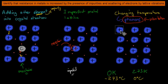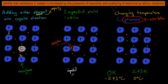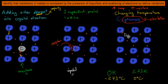At higher temperatures, there is a greater chance for electrons to collide with these vibrations, causing loss of energy — and that is resistance. Note this is for metals, not semiconductors: for a semiconductor, higher temperature actually lowers resistance. But for a metal, higher temperature means higher resistance, and lower temperature means lower resistance, because the phonons become larger and collisions between positive nuclei and negative electrons become more frequent.